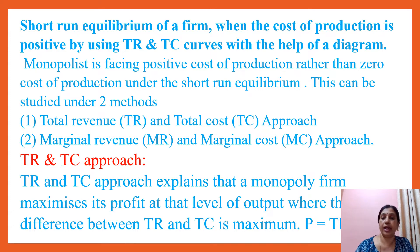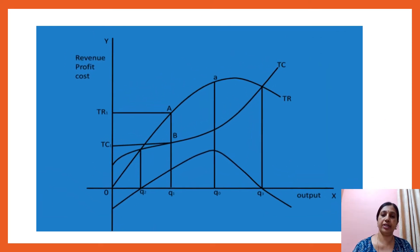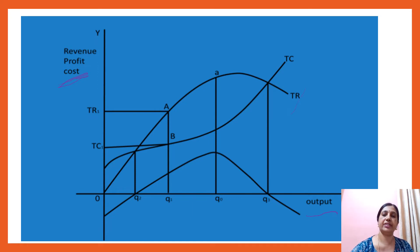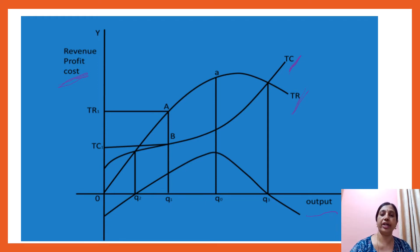This can be understood with the help of a diagram. On the x-axis we have taken output, and on the y-axis we have taken revenue, profit, and cost. You can see the TR curve increases, later it becomes maximum and starts decreasing. For a monopoly firm, TR increases at a decreasing rate, reaches maximum, and then starts decreasing when MR becomes negative. Total cost also increases as output increases.